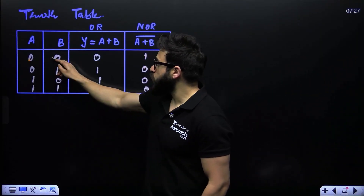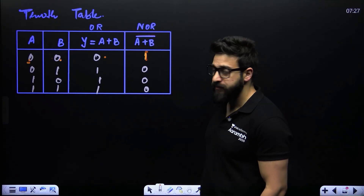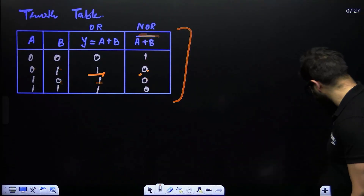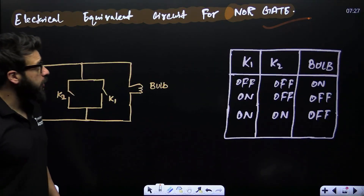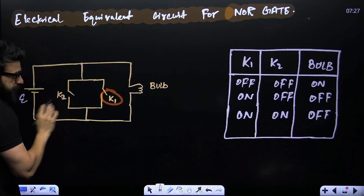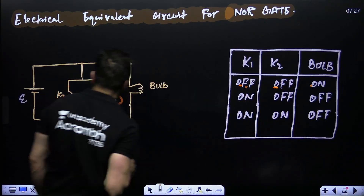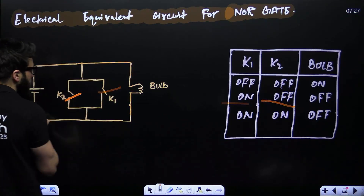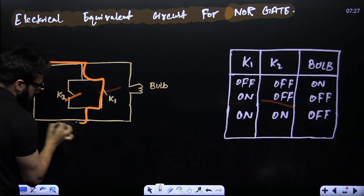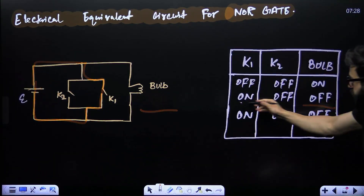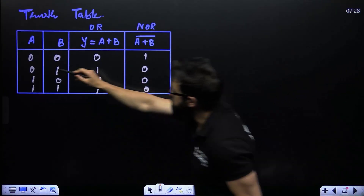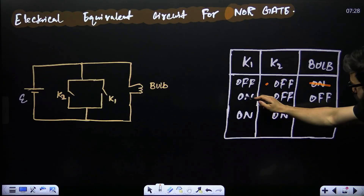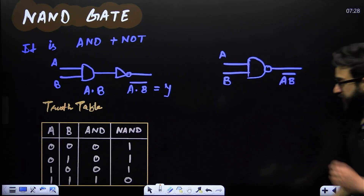Truth table of NOR gate: zero plus zero is zero, then bar → one; zero plus one is one, then bar → zero; one plus zero is one, then bar → zero; one plus one is one, then bar → zero. For the electrical equivalent circuit: if key one is off and key two is off (both zero), current flows through the bulb — bulb is on (output one). If either key is on, current bypasses the bulb — bulb goes off (output zero). This matches the NOR gate's truth table.